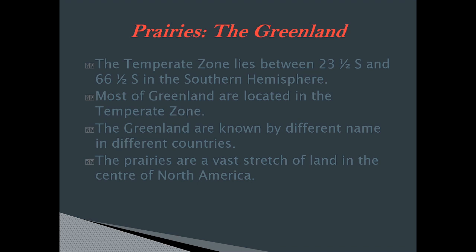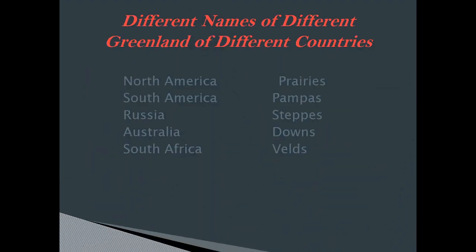The green lands are known by different names in different countries. The prairies are a vast stretch of land in the center of North America. Different names of green lands in different countries: North America — Prairies; South America — Pampas; Russia — Steppes; Australia — Downs; South Africa — Veld.